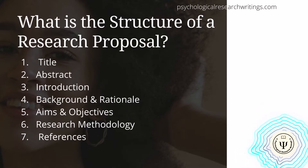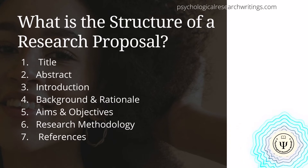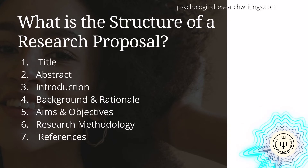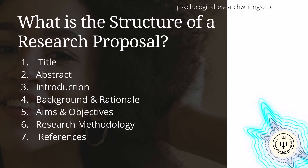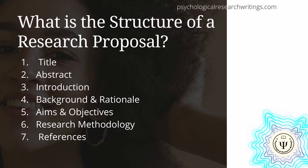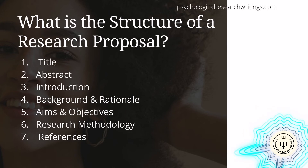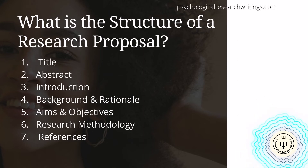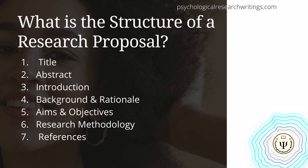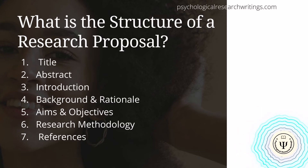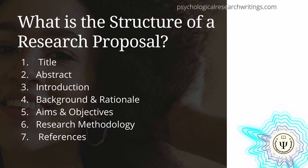How to structure and write up a research proposal: while the exact structure differs from university to university, there are seven essential ingredients that typically make up a research proposal: (1) title, (2) abstract, (3) introduction, (4) background and rationale, (5) aims and objectives, (6) research methodology, and (7) references or bibliography. For a detailed explanation of each of these and step-by-step guidance, have a look at the pop-up video, and consider getting the free research proposal template linked in the description.